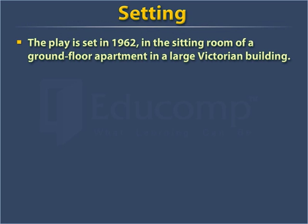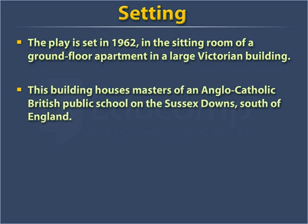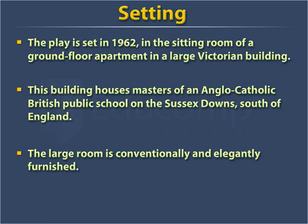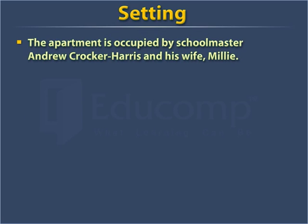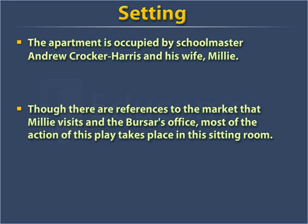Setting. The play is set in 1962 in the sitting room of a ground floor apartment in a large Victorian building. This building houses masters of an Anglo-Catholic British public school on the Sussex Downs, south of England. The large room is conventionally and elegantly furnished. The apartment is occupied by schoolmaster Andrew Crocker-Harris and his wife Millie. Though there are references to the market that Millie visits and the Bursar's office, most of the action of this play takes place in this sitting room.